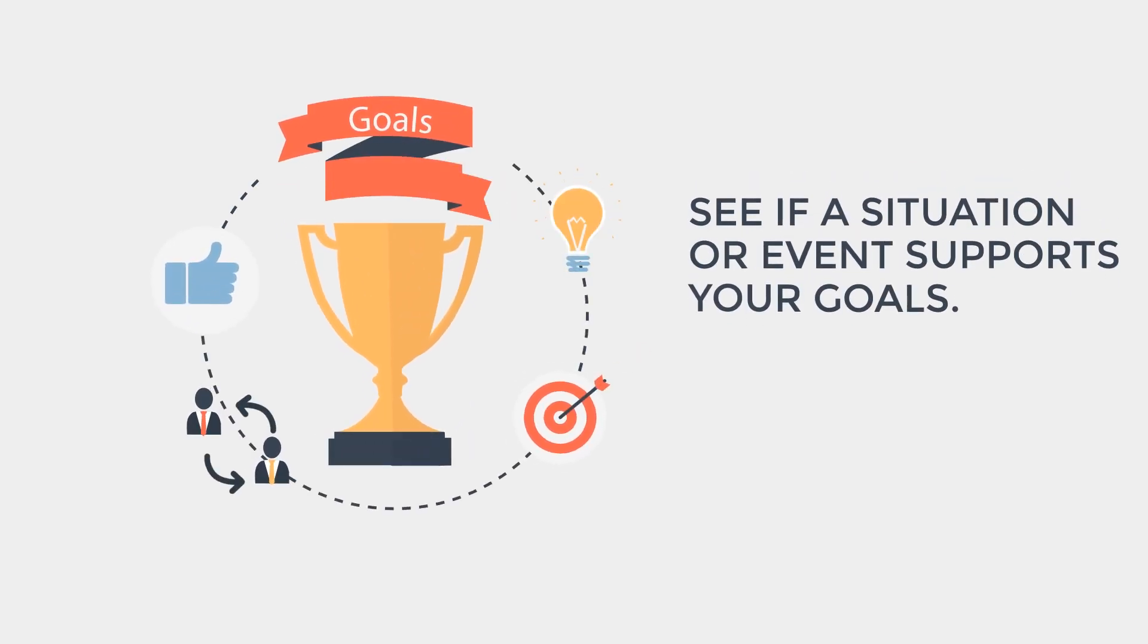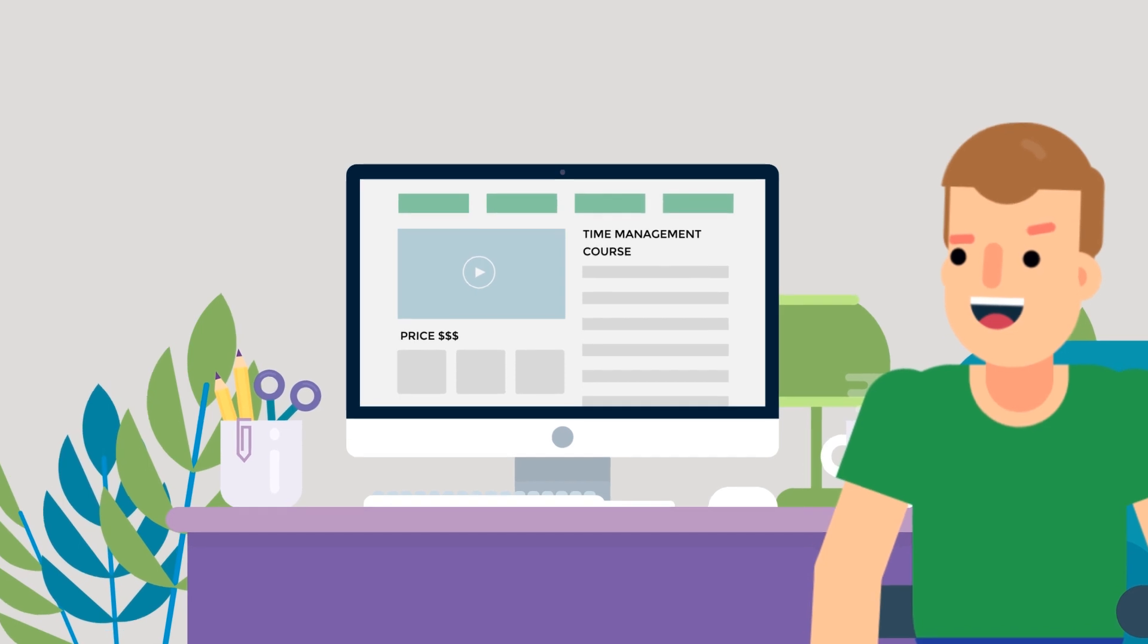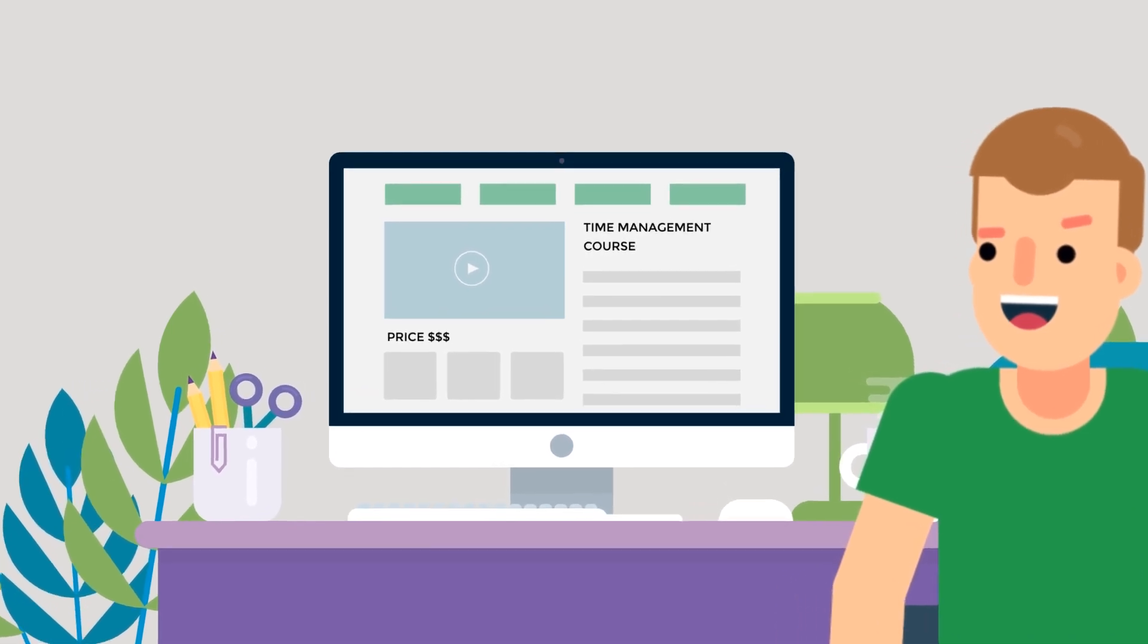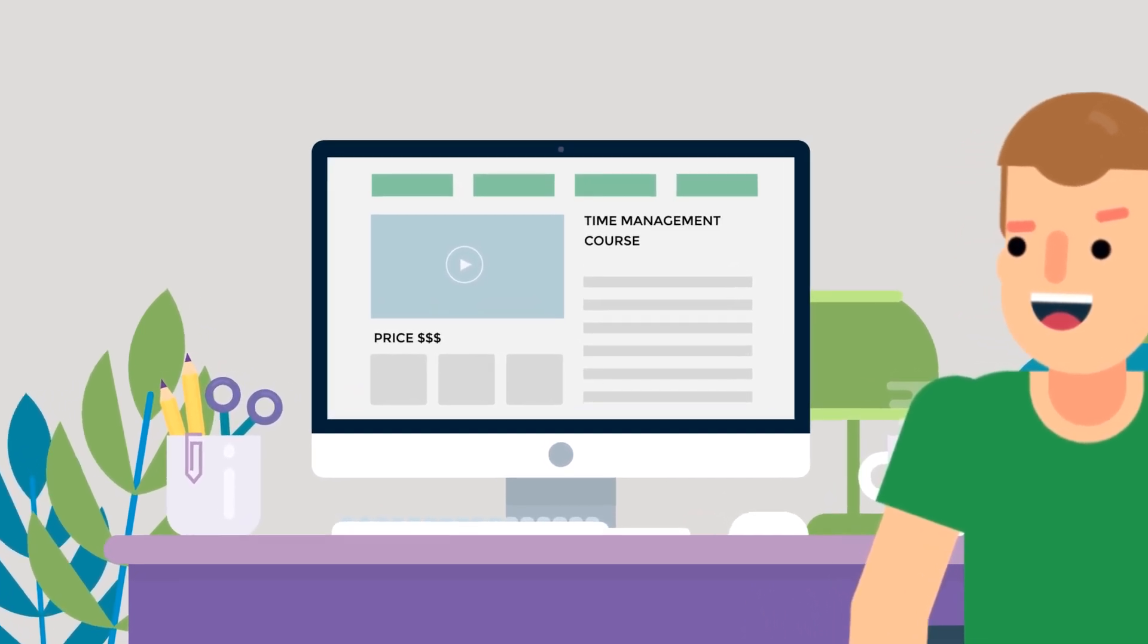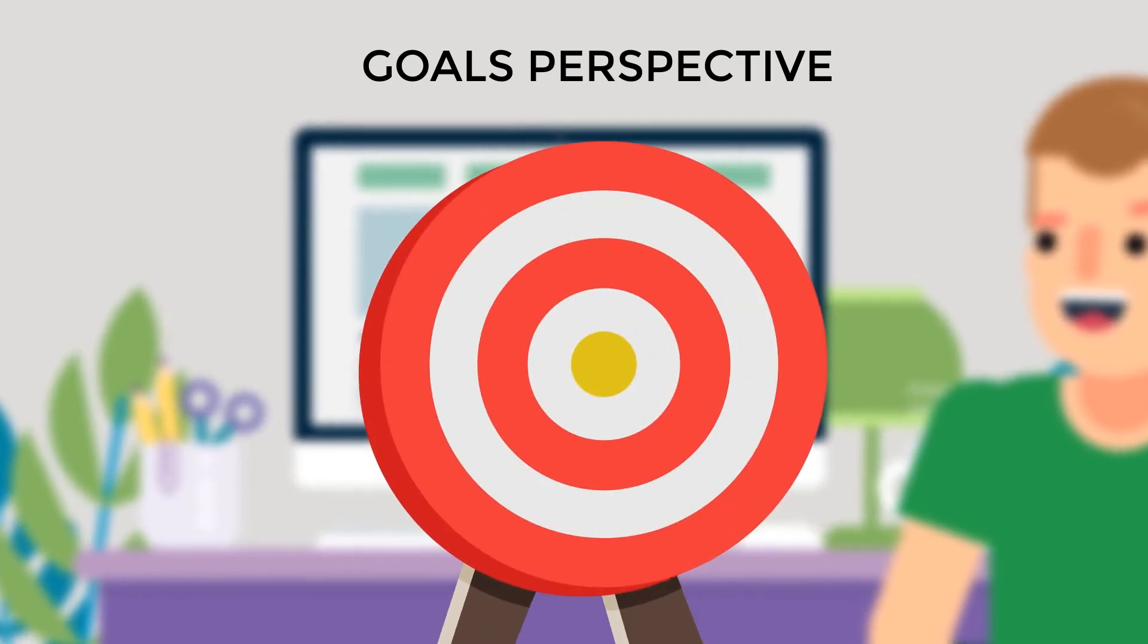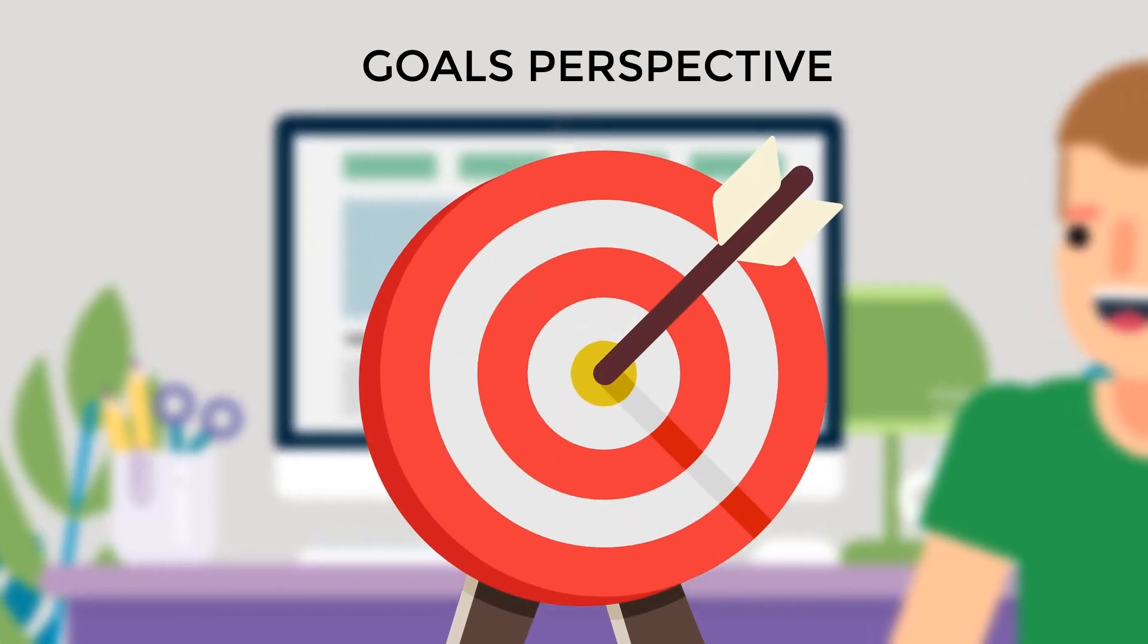Lastly, one step in defeating the FOMO is to see if a situation or event supports your goals. For example, I used to buy lots of internet marketing training programs in the past. However, once I started to see things from my goals perspective, what I wanted to achieve, and if the program supported that goal, I was able to eliminate distraction and fears of missing out on something seemingly important.